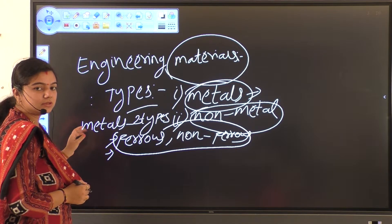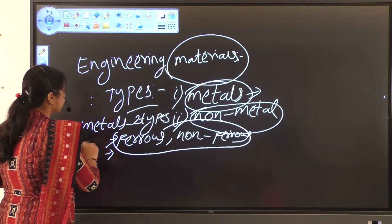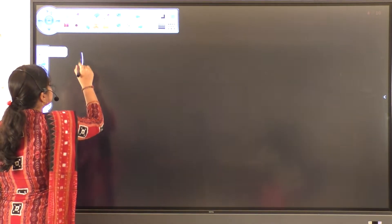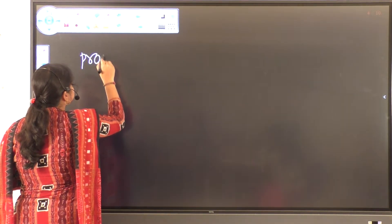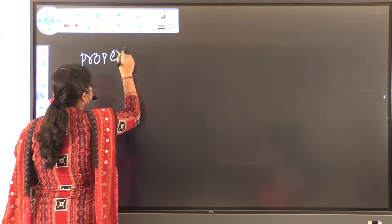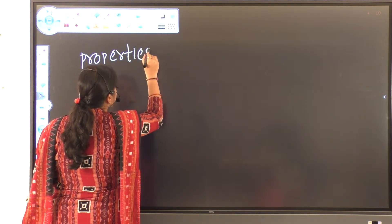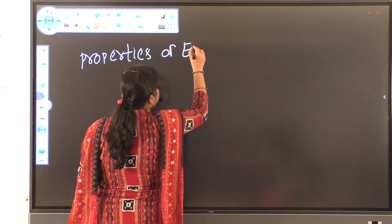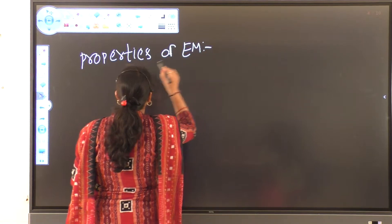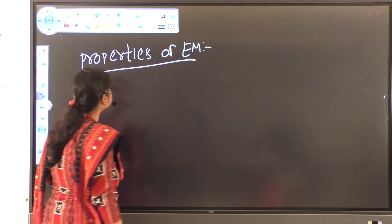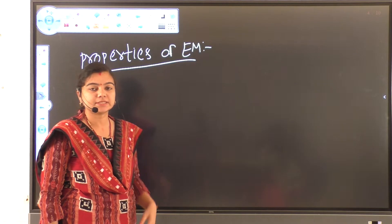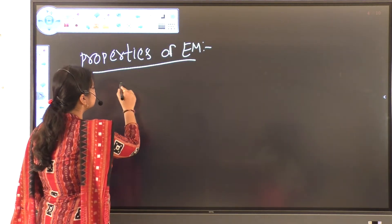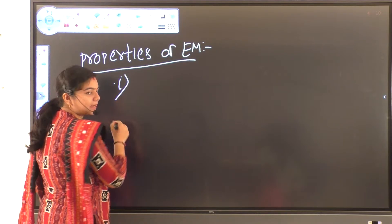Now we discuss about the Properties. After the Types, now we discuss about the Properties of Engineering Materials. Basically, Engineering Materials Properties are divided into three types: first one is Physical Properties, second one is Chemical Properties, and third one is Mechanical Properties.